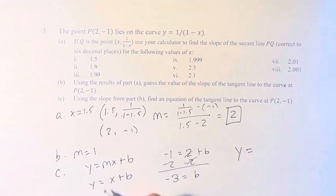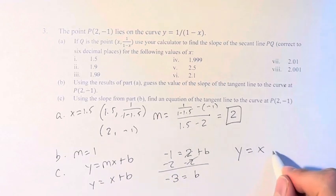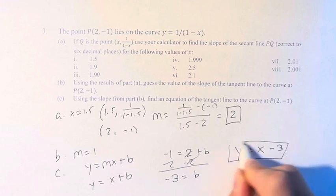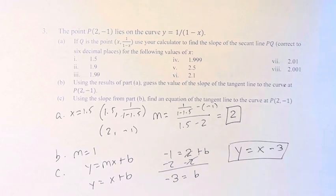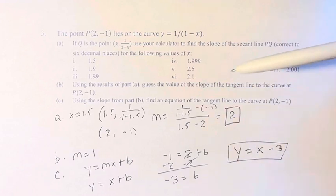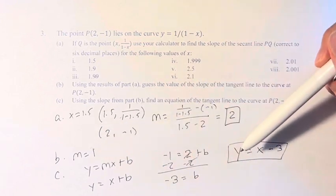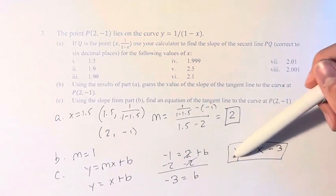So y is equal to x times 1, but we don't even have to write that, plus b is minus 3. So we got all of our secant lines. We saw that their slopes approached 1, and we used that to create the tangent line y equals x minus 3.